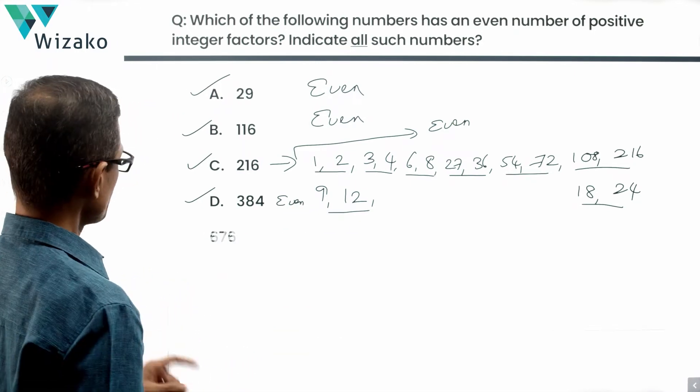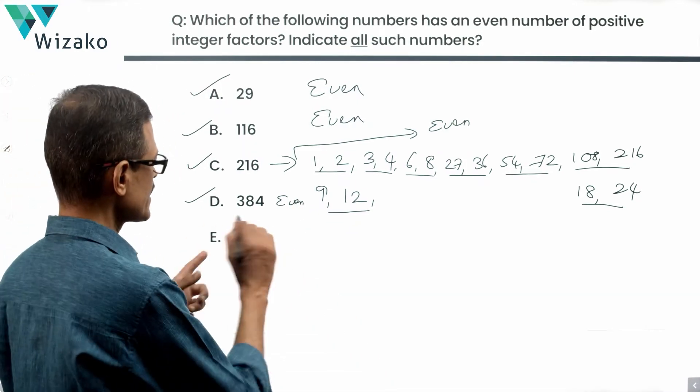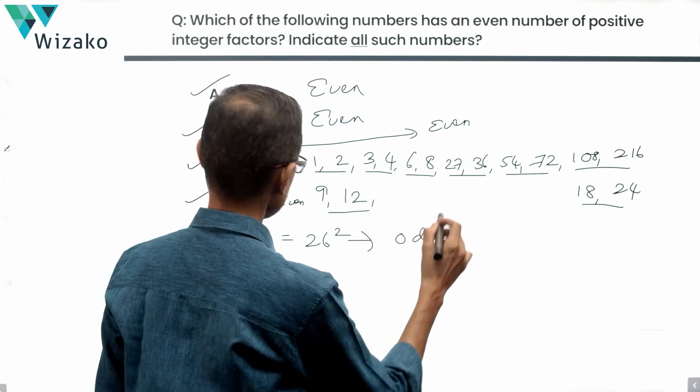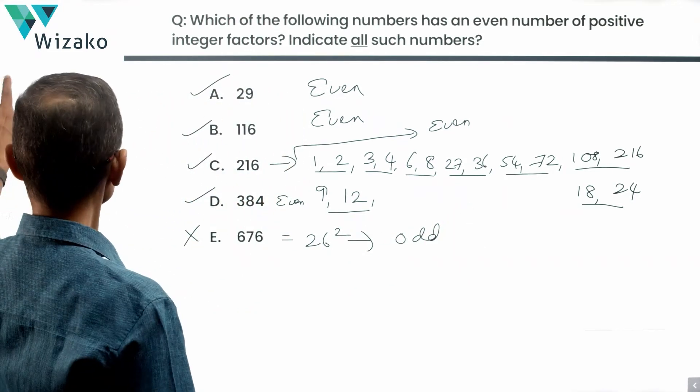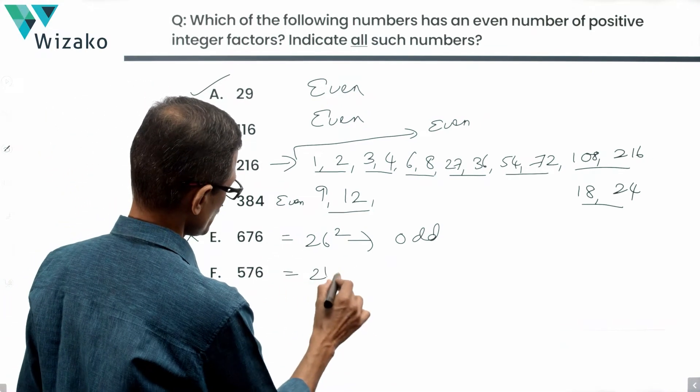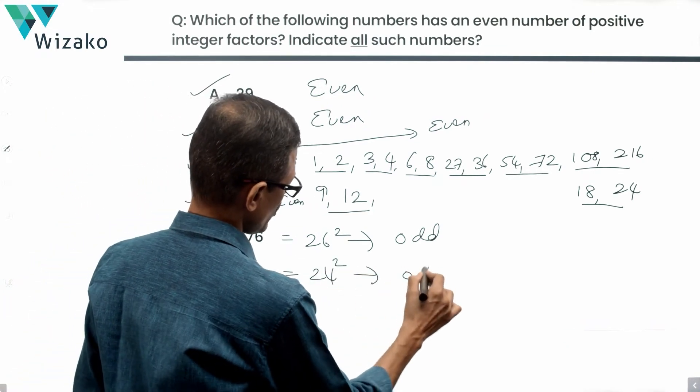So look at E. 676. 26 square this is. So this is going to have an odd number of factors. It is definitely not one of our answers. Let's look at 576. Yes, it's also a perfect square incidentally. This is 24 square. So it'll have an odd number of factors.